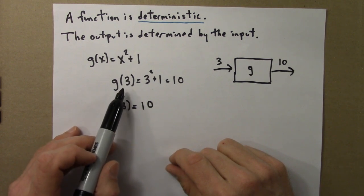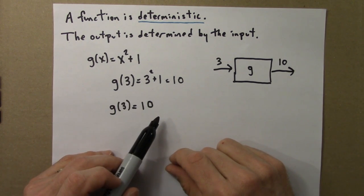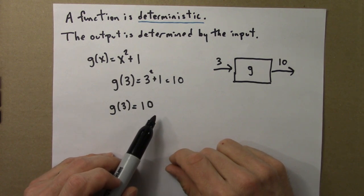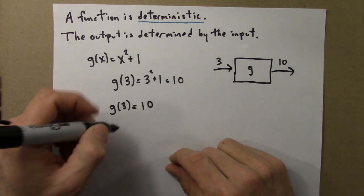The same input gives the same output every time. The function never makes a mistake, there's no element of chance. Same input always gives you the same output.